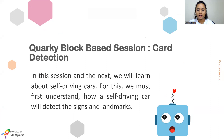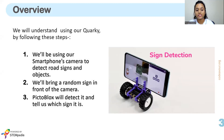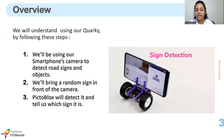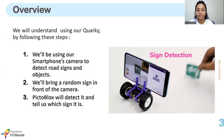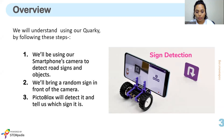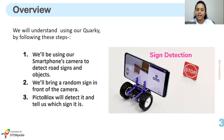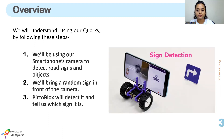This card detection session — and in the next session we will learn about self-driving cars. For this, we must first understand how car driving works and how Quarky is able to detect signs and landmarks. We will use our smartphone's camera to detect road signals and objects. We will bring a random sign in front of the camera — we have several directions like right, left, backward, forward, U-turn. PictoBlox will detect it and tell us which sign it is. That is all about today's activity.